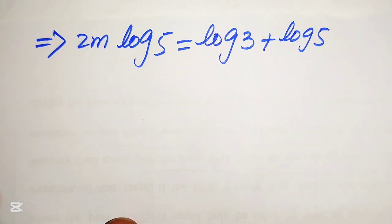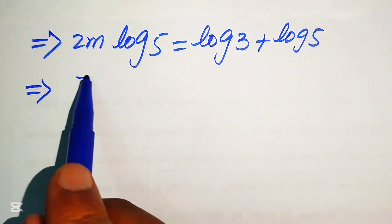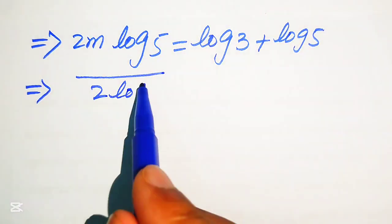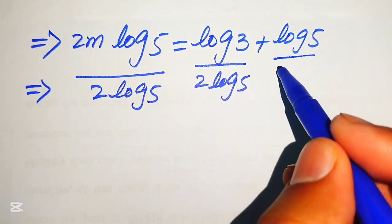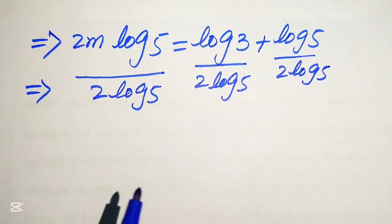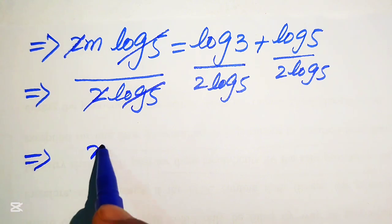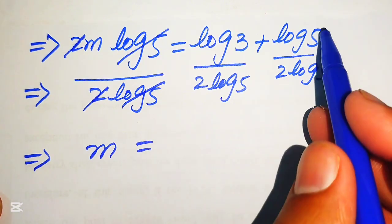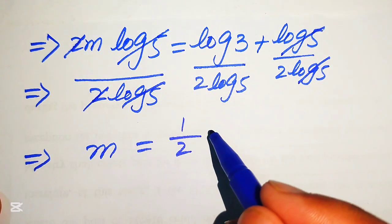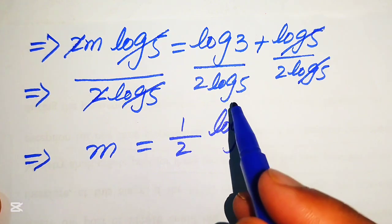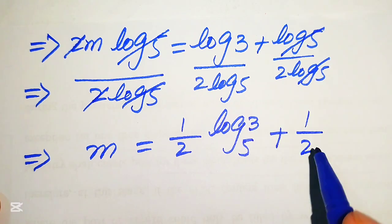To find the value of m, we divide both sides by 2 times log 5. The 2s cancel, the log 5 terms cancel, and we get m equals log 3 over log 5, multiplied by one half. We write log 3 over log 5 as log base 5 of 3, so m equals one half times log base 5 of 3, plus one half.